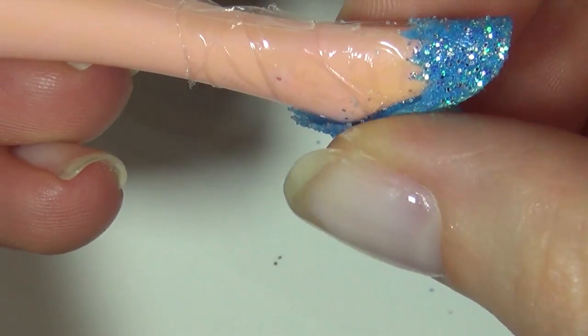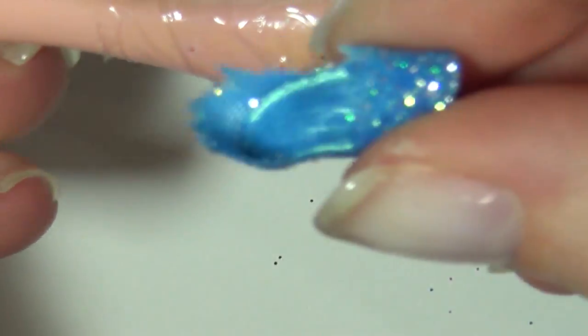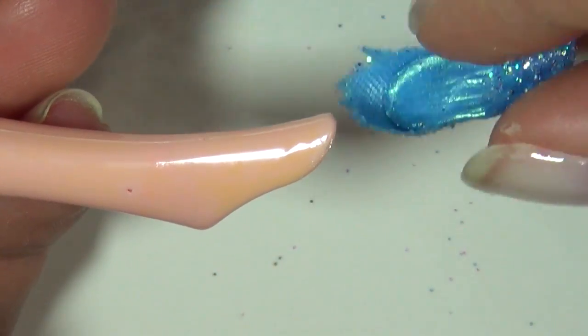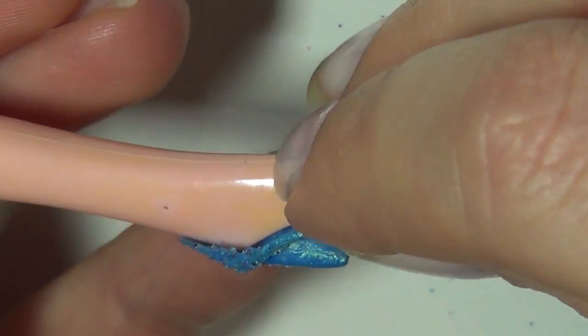Once it's all dry, remove it from the foot and peel off the kitchen wrap. And there you go, you have your own custom doll shoes.